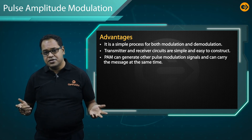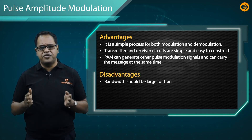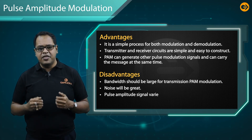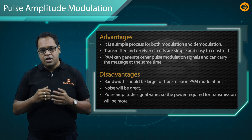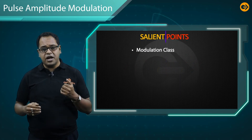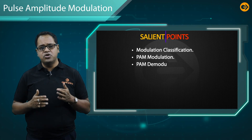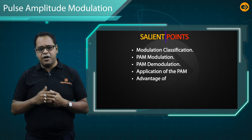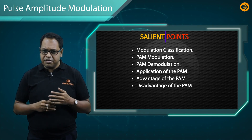However, PAM has some disadvantages. The bandwidth required for transmission of PAM is large, the noise level is high, and since the pulse amplitude varies, more power is required for transmission. To summarize, today we discussed modulation classification, PAM generation, PAM demodulation or detection, applications of PAM, and the advantages and disadvantages of Pulse Amplitude Modulation.